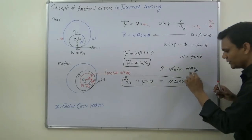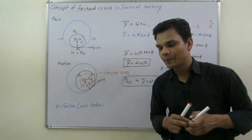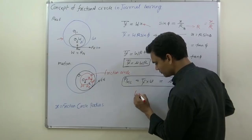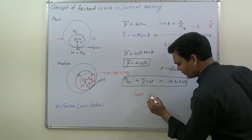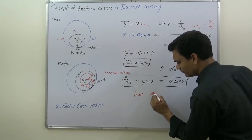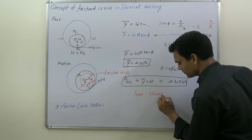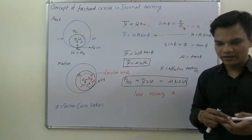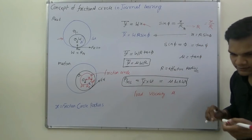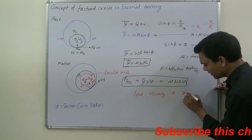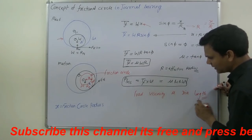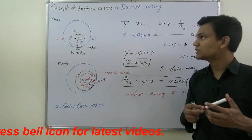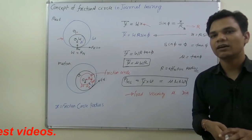For the friction circle in a bearing, the value of the friction circle radius depends on: the load, the viscosity of the fluid, the friction coefficient, the diameter of the shaft, and the length of the shaft. These are the factors on which the friction circle radius depends. This concludes the concept of friction circle radius in a general bearing.